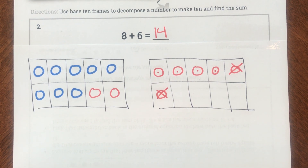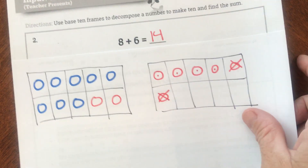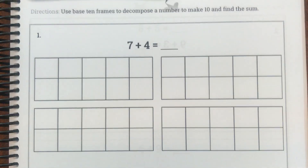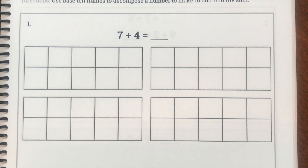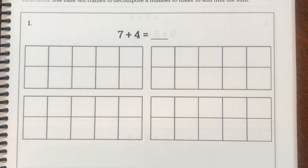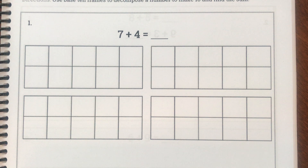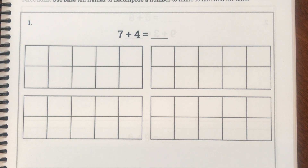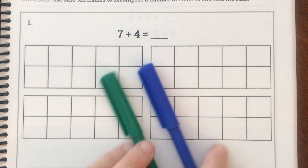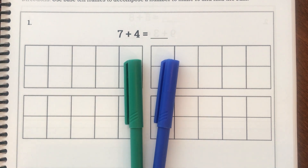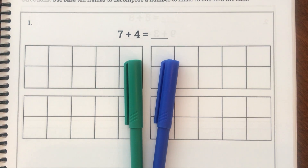Now we're going to try some of those together. You might want to use two different colors like I did. Normally I ask you to use your pencil, but you might want to use two different crayons or markers. If you want to pause the video and find two different colored things to write with, that would be a good idea. I used a blue and a red marker, but you don't need to use those exact colors — just have two different ones. I'm going to use blue and green this time.